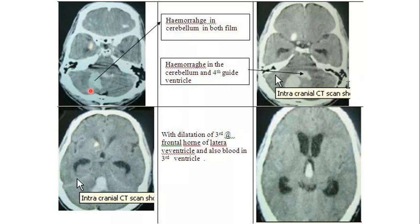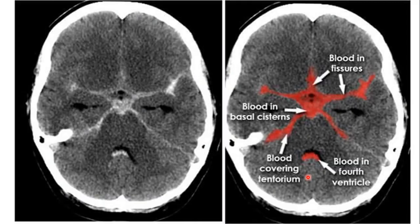Another example of hematoma with ventricular extension: bleeding within the right cerebellar hemisphere extending into the fourth ventricle, resulting in dilatation of the temporal horns of the lateral ventricle indicating hydrocephalus due to obstruction. Blood is also seen in the third ventricle, in the fissures, along the prepontine cistern, ambient cistern, and fourth ventricle.